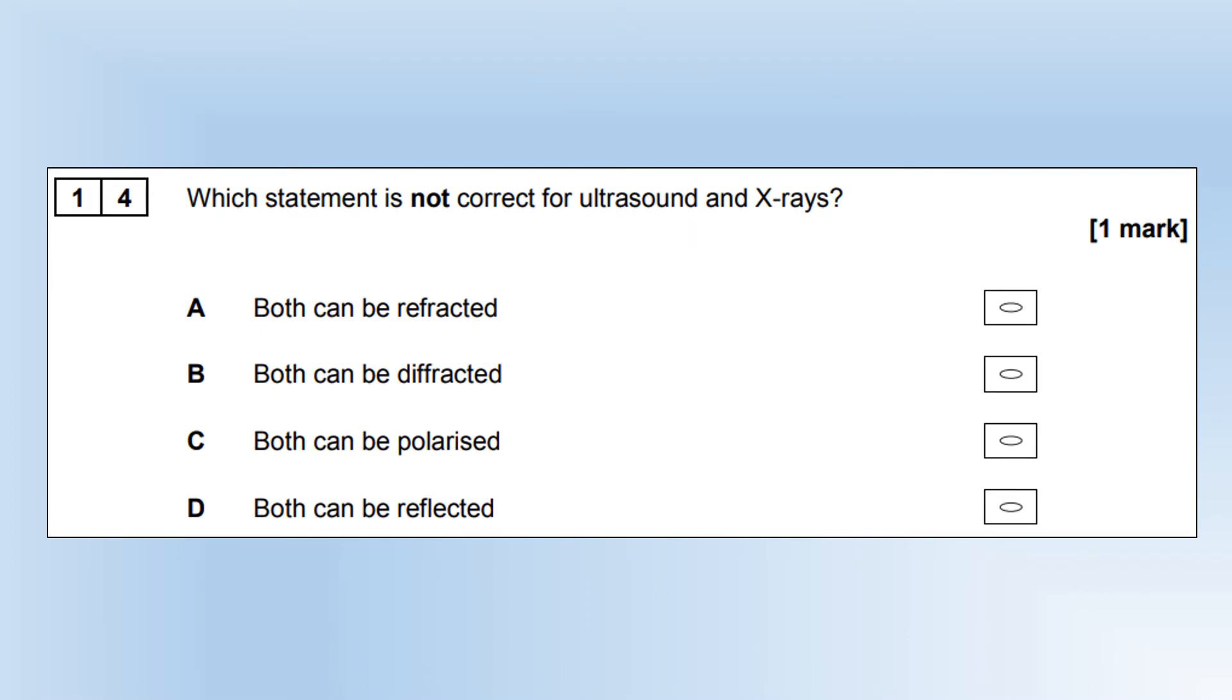Which statement is not correct for ultrasound and x-rays? Ultrasound is a longitudinal wave. X-rays are an electromagnetic transverse wave. That's why both of them cannot be polarized. Because ultrasound is longitudinal, it cannot be polarized. But all the other processes can happen to both.